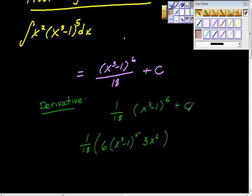And the derivative of this mess, this C right here, is just what? The derivative of a constant is zero, so that goes away.